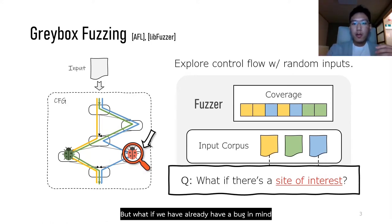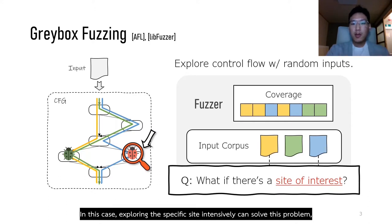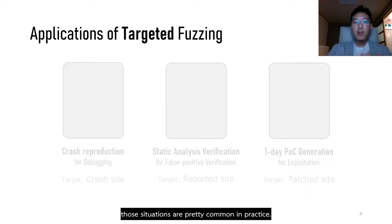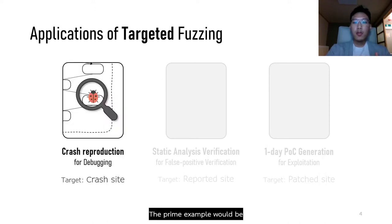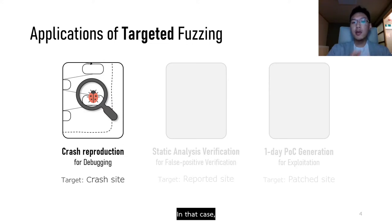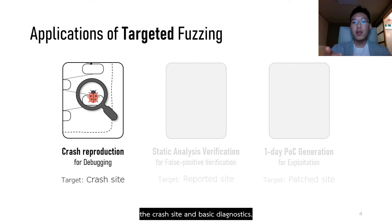But what if you already have a bug in mind that you want to inspect further — a bug you already know exists in the program? In this case, exploring a specific site intensively can solve this problem, but you cannot achieve this goal with conventional Greybox Fuzzing. These situations are actually pretty common in practice. A prime example would be reproducing a crash reported by users where the report is not accompanied by a reproducing input, so you need to reproduce the vulnerability from scratch. This is very hard when you only know a crash site or basic diagnostics.